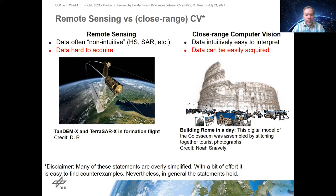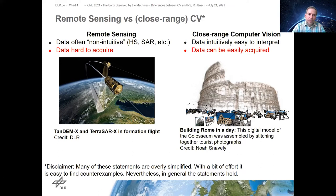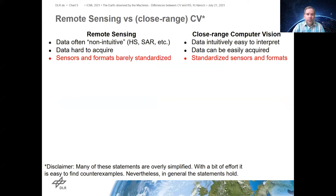For remote sensing data, the situation is much different. Images acquired by satellites or airborne sensors are usually not free, though the situation is getting better — the Copernicus program makes Sentinel constellation data free to the public. Another problem is standardization: in close-range computer vision you have PNG, TIFF, or JPEG images with clear data formats. In remote sensing, every sensor and satellite comes with its own data format, requiring different loaders, visualization techniques, and pre-processing techniques.